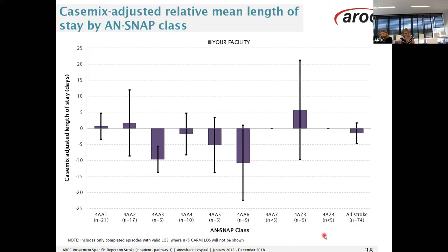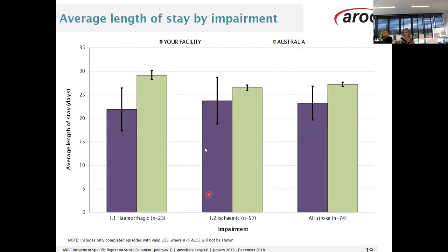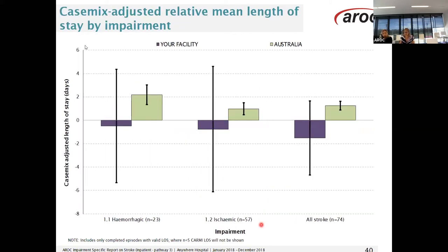Here we are looking at case mix adjusted mean length of stay by ANSNAP class. The zero line again represents where we would have expected your length of stay to be given your mix of cases. This example shows a number of ANSNAP classes where the length of stay is shorter than expected — that is, below the line — however it is important to note that the number of episodes in these can be small. Next we look at average length of stay by impairment group as raw data, and then the case mix adjusted length of stay by impairment group. You can see that your facility's overall case mix adjusted length of stay is shorter than expected for your case mix.